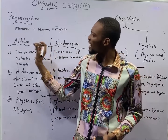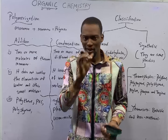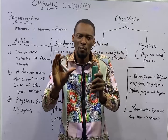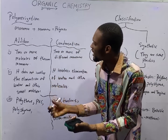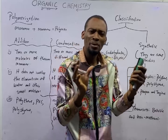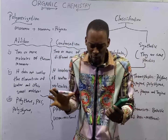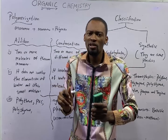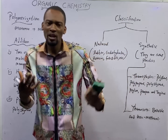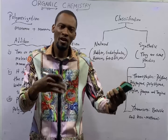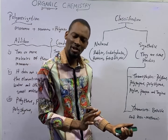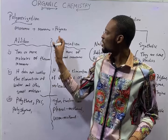In this episode, we shall be looking at Polymerization. Polymerization is a common phenomenon among organic compounds. It is a phenomenon where smaller compounds or smaller molecules combine to form a bigger one. The smaller molecules or compounds that combine are referred to as the monomers, while the bigger molecule or compound formed is referred to as polymers. So, polymerization is simply monomer plus monomer to give polymers.